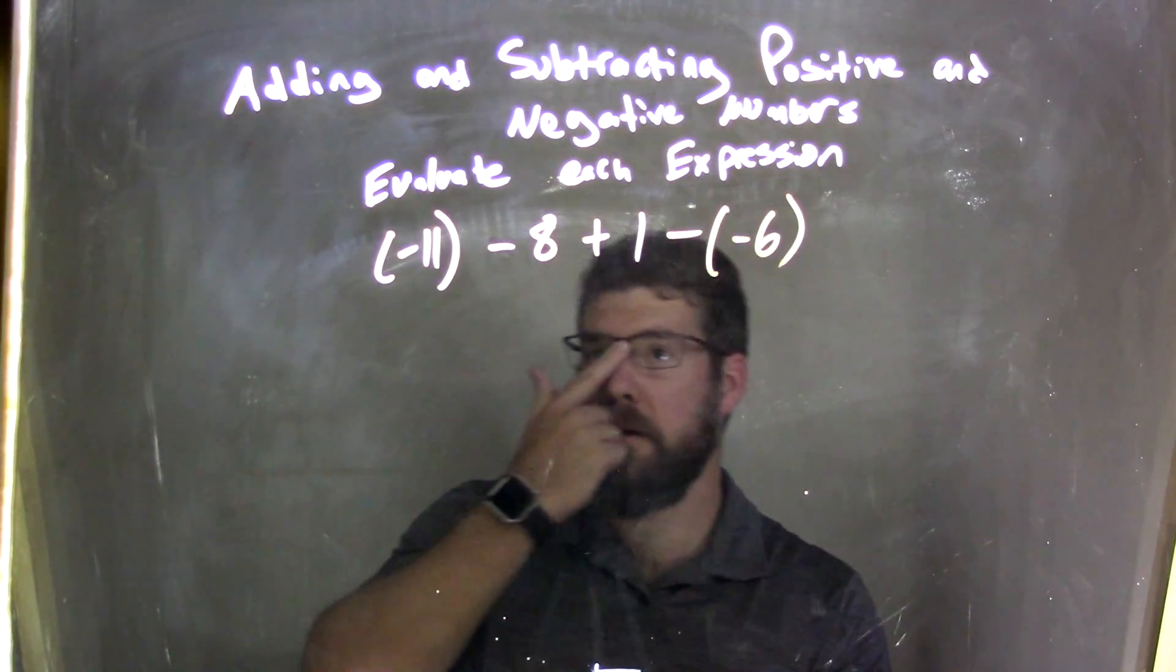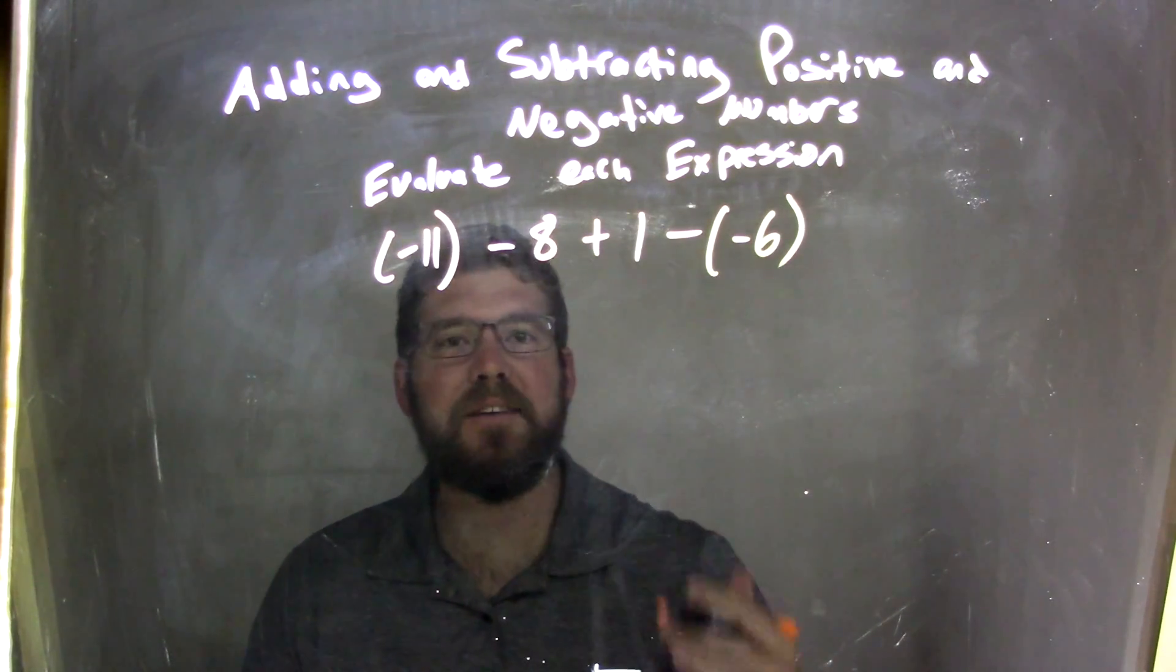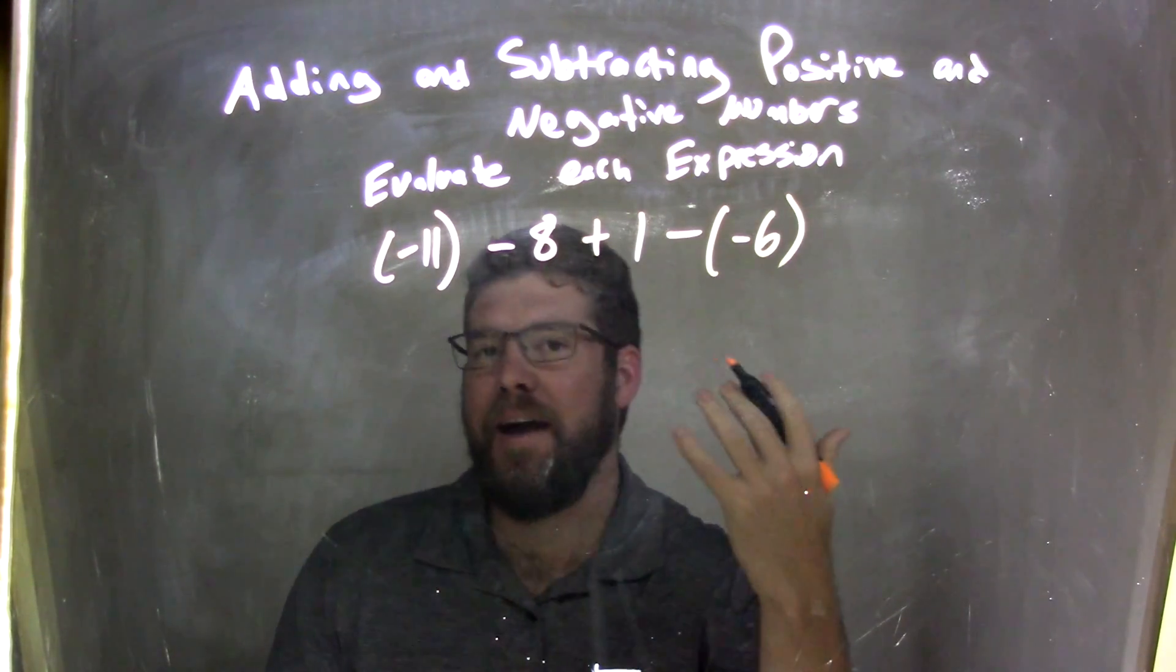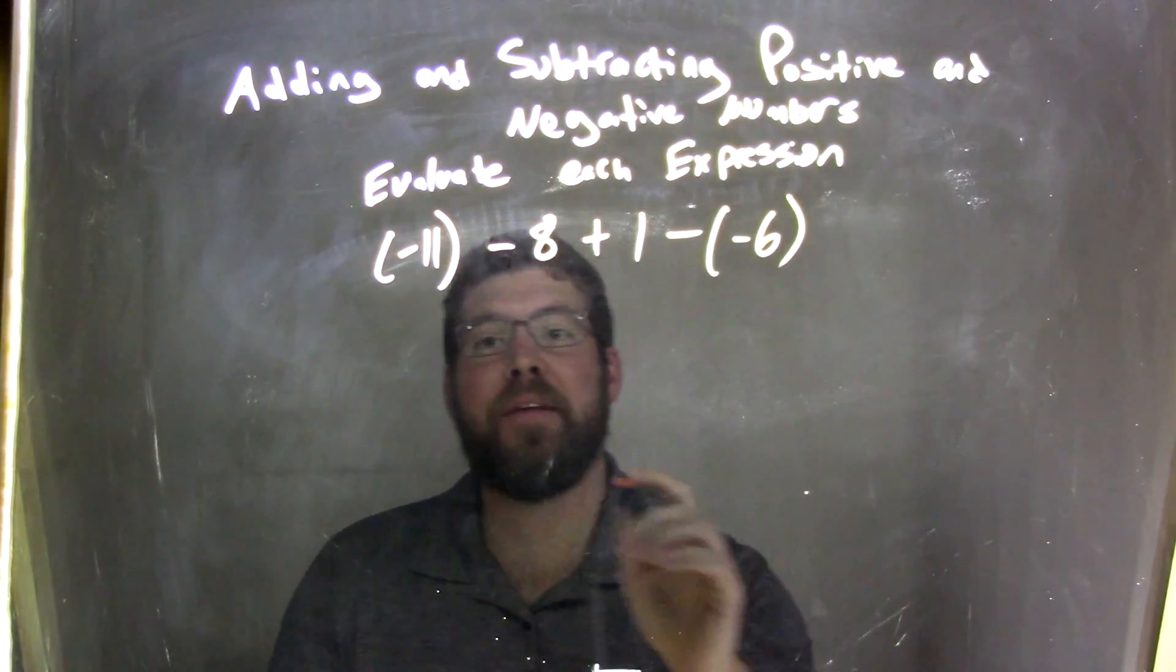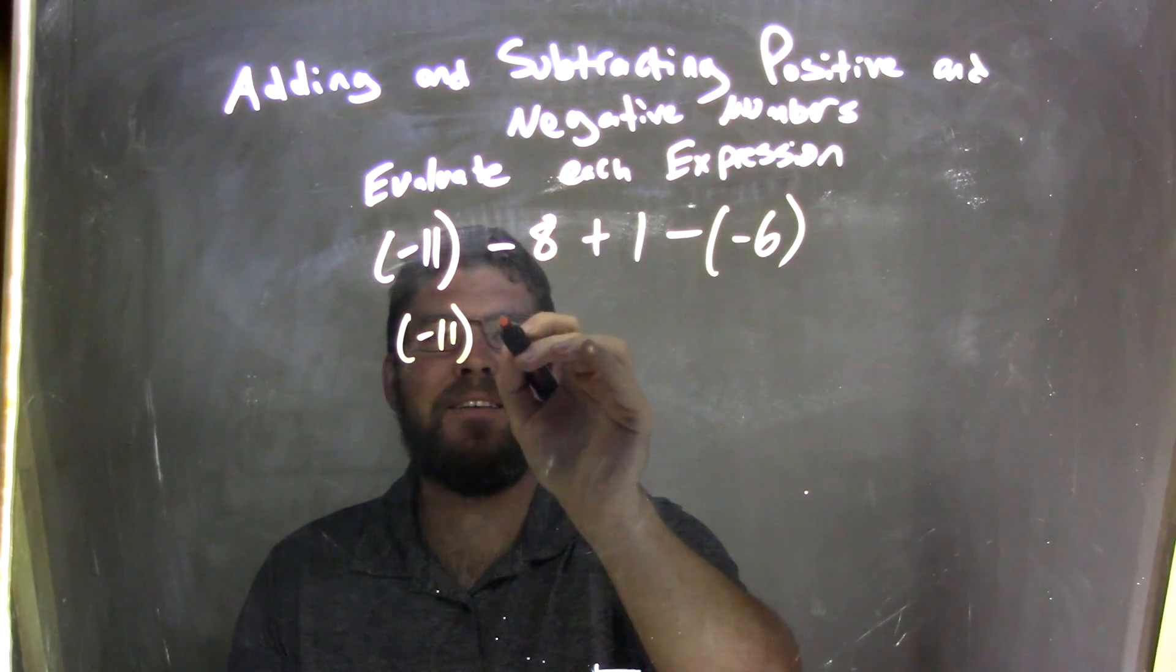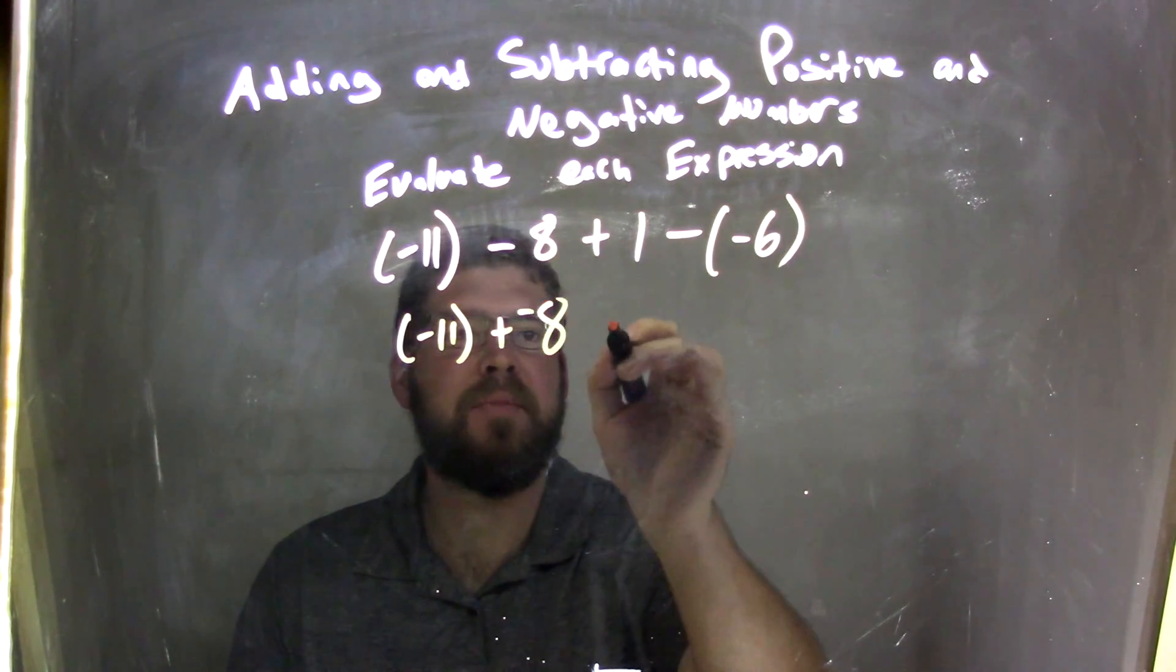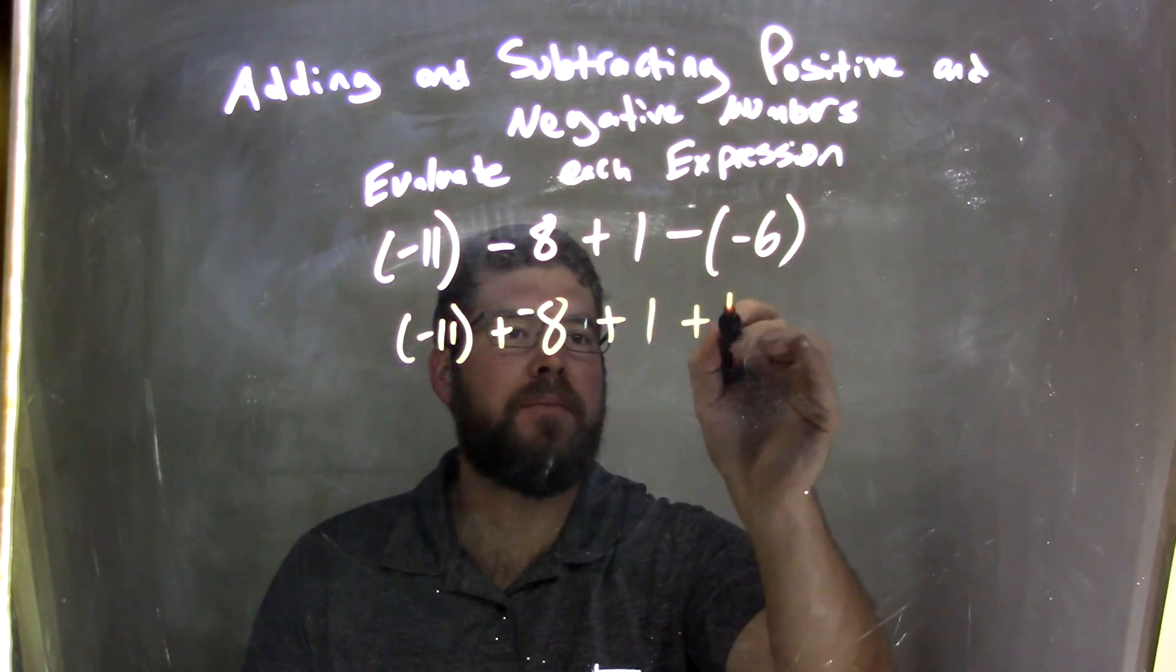What I need to do here is I like to personally make everything addition. I just find it easier. Everyone has a different method. That's the way I like to do it. So I have the negative 11 here. I start off with that minus 8, and the same thing is plus negative 8 plus 1. And then the double negatives make it plus positive, plus positive 6.